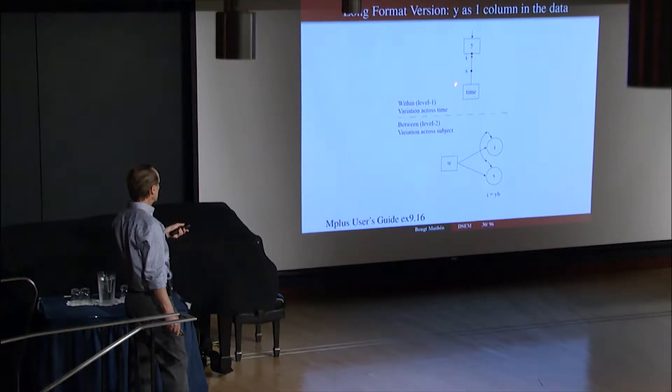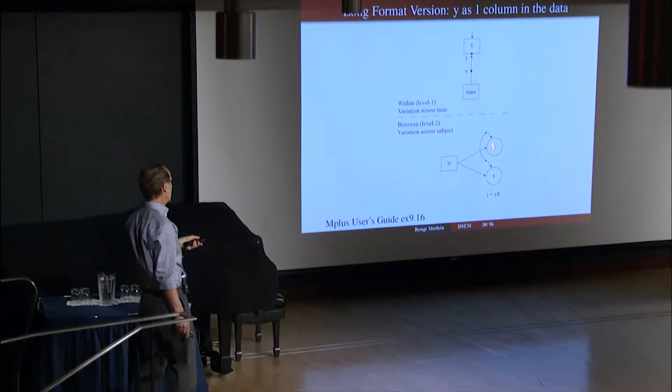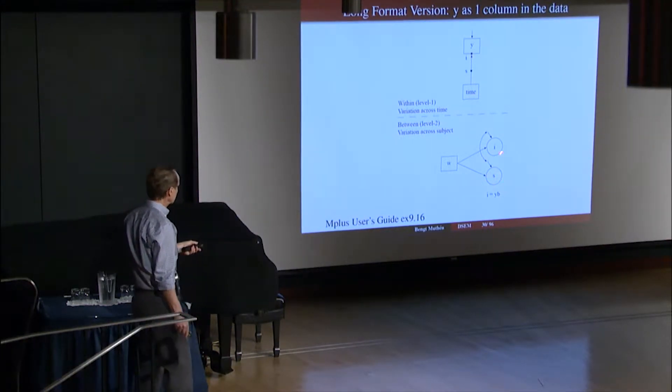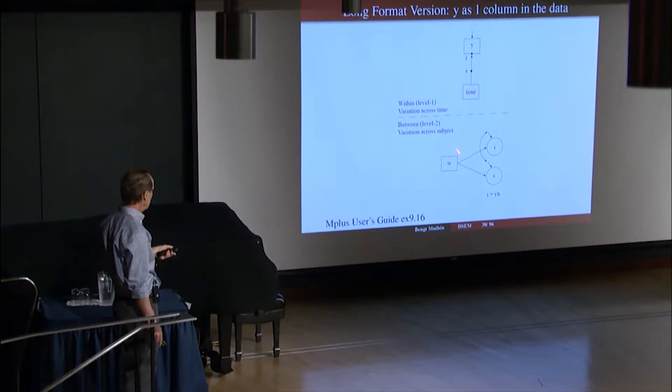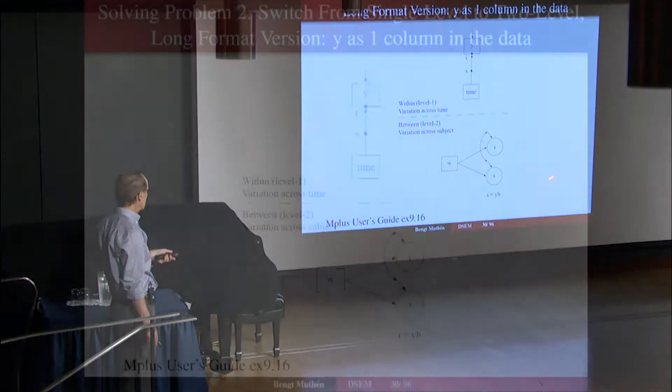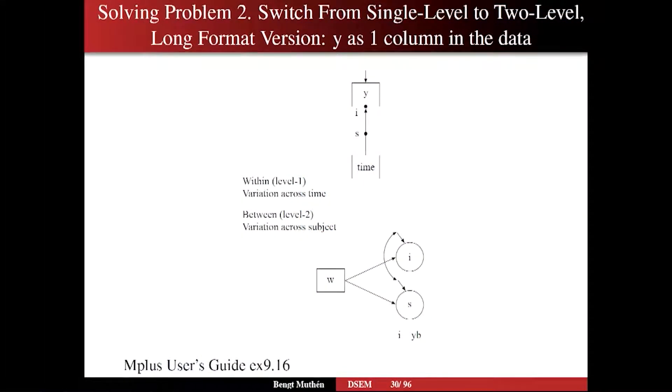You regress on time, which is the variable, and that regression has a random intercept and a random slope—the same I and S that we talked about. Those filled circles become open circles, namely continuous latent variables on between that are then regressed on the between-level variable. And this is a single W, the background of the family, so these quantities vary across subject. And here we consider the variation across time, the dynamic part, as Ellen talked about.